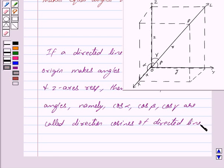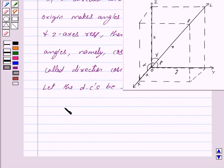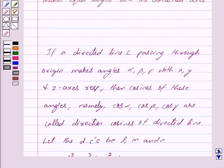Now let the direction cosines be L, M and N. Then the relation between them is given by L square plus M square plus N square equals 1, and this is the key area behind our question.